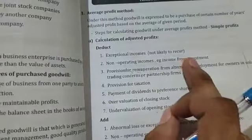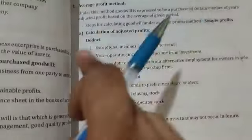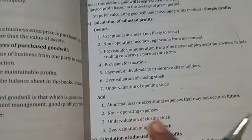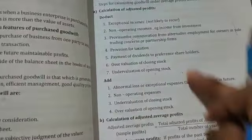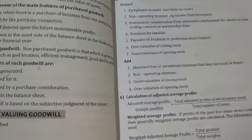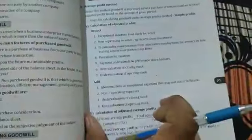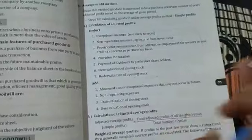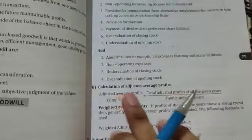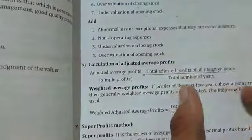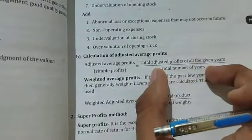Also minus exceptional incomes not likely to occur and non-operating incomes. Add back: abnormal losses, non-operating expenses, and undervaluation of closing stock. The simple sum with these adjustments comes for 6 marks. Total adjusted profit divided by total number of years gives the adjusted average profit.